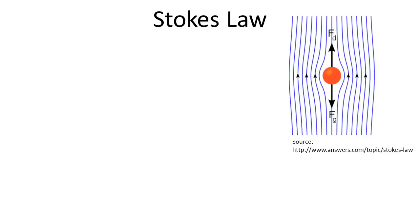With those assumptions we're ready to talk about Stokes law. Imagine we have a spherical particle that is falling through a fluid and it has forces acting upon it. There's a downward force due to gravity and there is an upward drag force acting on this particle. There's also a buoyant force, and that has been incorporated in this diagram with the force associated with gravity, as I'll show you in just a moment.